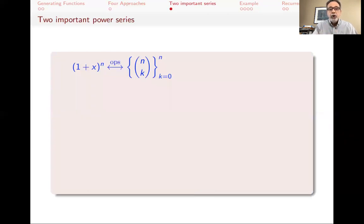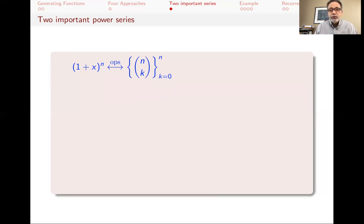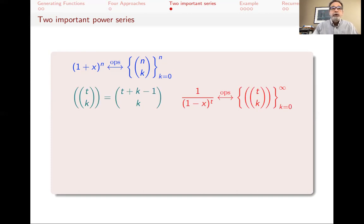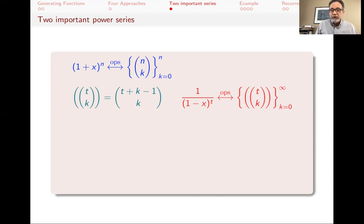We are going to look at these two last approaches today. If we're going to use known power series, then we need to know some. There are two that are really important. One comes from the binomial theorem: (1+x)^n expands as n-choose-0 plus n-choose-1·x plus n-choose-2·x², and so on — the ordinary power series for one row of Pascal's triangle. Another is the ordinary power series for multi-choose numbers: 1/(1-x)^t, where the coefficients are t multi-choose k, which equals (t+k-1)-choose-k.